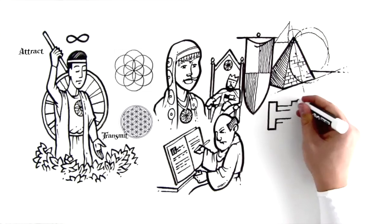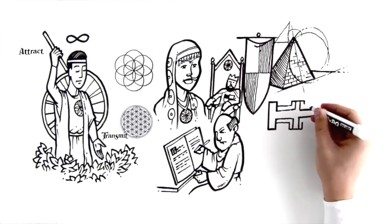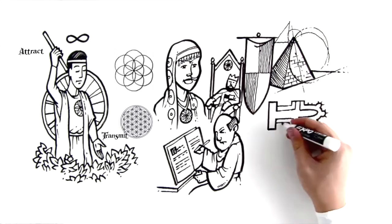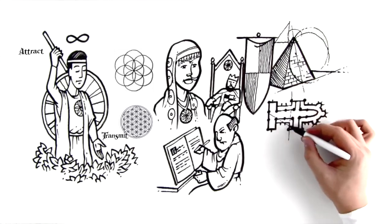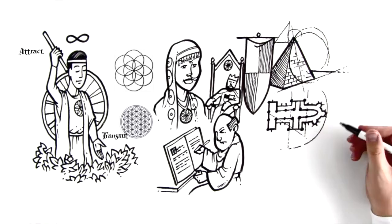In fact, temples from the ancient world right through to the great medieval cathedrals of Europe all applied the same principles of sacred design because of the known effect that ratio, shape, and proportion could create.